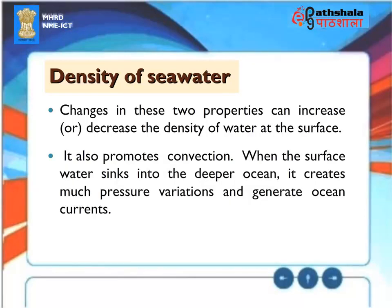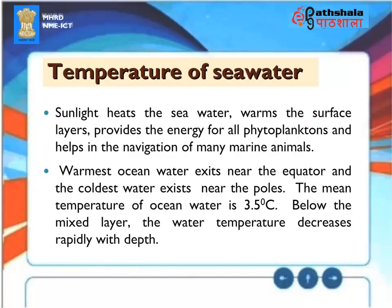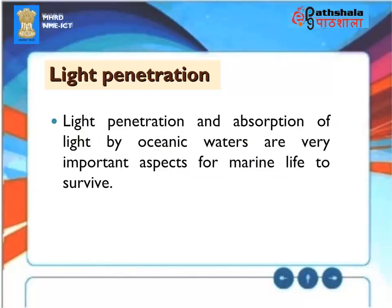Changes in temperature and salinity can increase or decrease the density of water at the surface, and also promote convection. When surface water sinks into the deeper ocean, it creates pressure variations and generates ocean currents. Temperature of Seawater: Sunlight heats the seawater, warms the surface layers, provides energy for all phytoplanktons, and helps in the navigation of many marine animals. The warmest ocean water exists near the equator, and the coldest water exists near the poles. The mean temperature of ocean water is 3.5 degrees centigrade. Below the mixed layer, the water temperature decreases rapidly with depth. Light penetration and absorption of light by oceanic waters are very important aspects for marine life to survive.